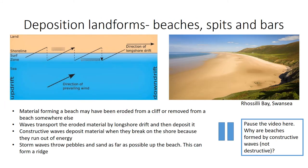We all have our own idea of what a perfect beach is — maybe yours is a gently sloping white sandy one, or one with boulders and rocks and rock pools. Whatever your ideal beach is, they've all been created as a result of the processes of erosion, transportation and deposition. The material forming a beach may have been eroded from a cliff or removed from a beach somewhere else, and waves can transport the eroded material by longshore drift and then deposit it. Constructive waves deposit the material when they break on the shore in a sheltered bay because they run out of energy. The backwash is weak and sand and pebbles are left behind to form beaches.